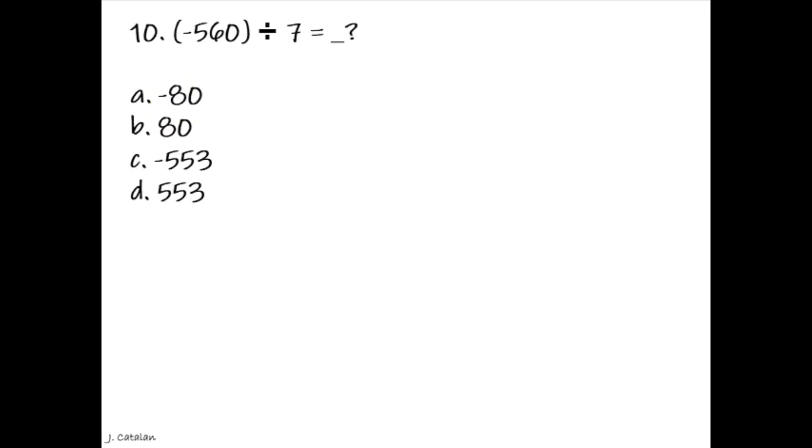Question. Negative 560 divided by 7 equals underscore. Answer. Negative 80.